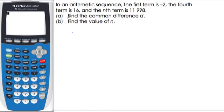In this example, we are given an arithmetic sequence with a first term of minus 2 and a fourth term of 16. The nth term is 11,998. Find the common difference in part (a).